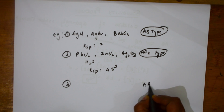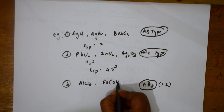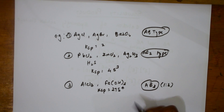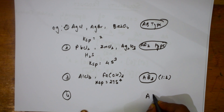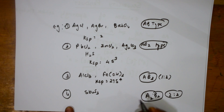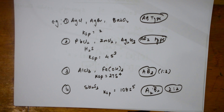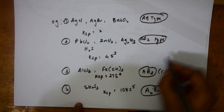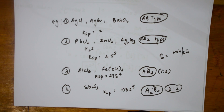For A2B2 type — a 2:2 ratio — for example Sb2S3, when you raise the concentrations to their respective powers, Ksp becomes equal to 108S to the power of 5. This is how you write it. S here is solubility, and the unit of solubility S is mole per litre. This is how you learn the solubility product.